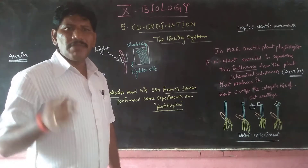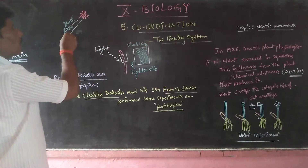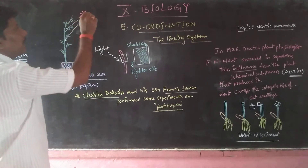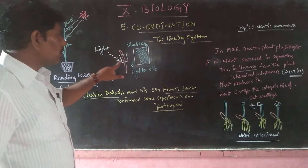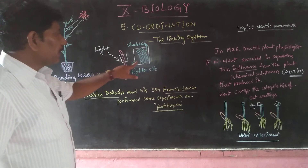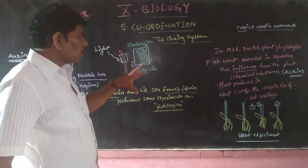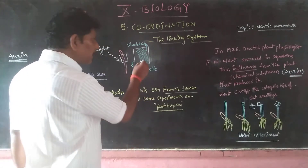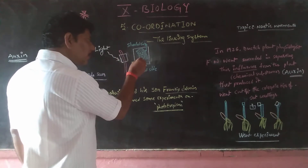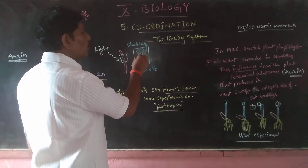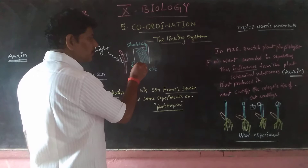When they removed the metal foil and allowed light towards the plant, the plant showed bending towards the sunlight. Because light is the external stimulus — when light penetrates the cells, it increases the natural plant growth hormone already present in the cells. When light falls on the tip of the plant, it promotes cell elongation and differentiation in the shoot system, especially at the tip.